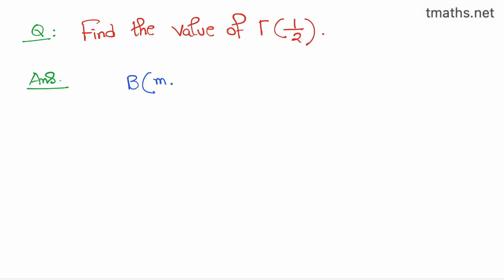We know that B(m,n) is equal to gamma m times gamma n divided by gamma of m plus n.